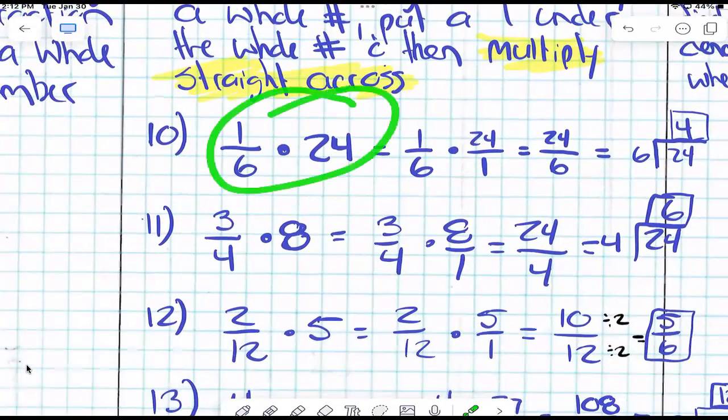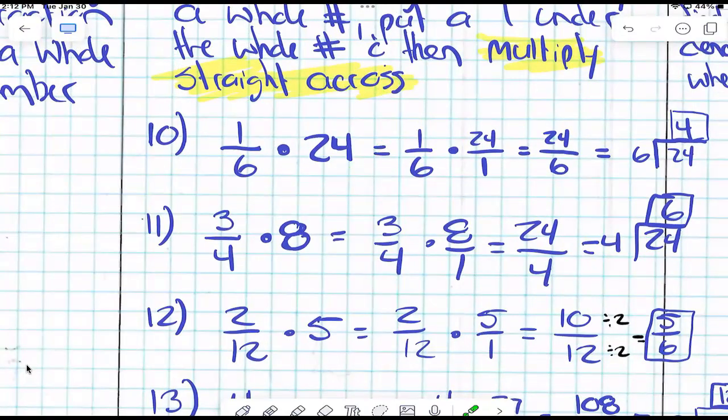So I have 1/6 times 24. I'm going to rewrite it as 1 over 6 times 24 over 1. Because this 24 can be 24 over 1, right?